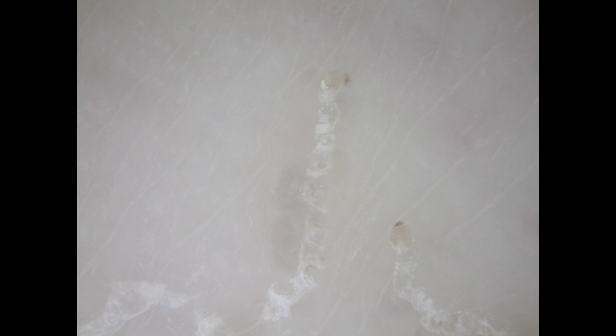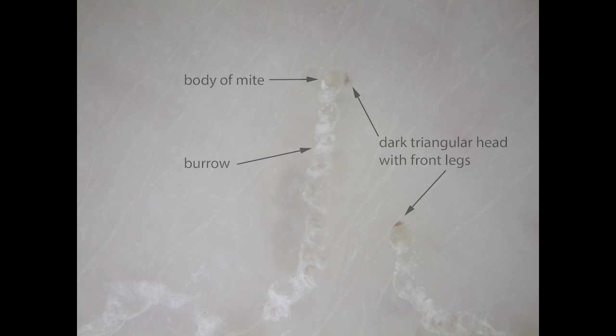Another bonus of the dermatoscope is the ability to see the scabies mite below the skin without doing a scraping and using a microscope. The scabies mite in these photos has a darker, triangular head and a lighter, circular body.